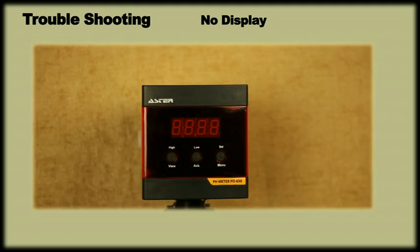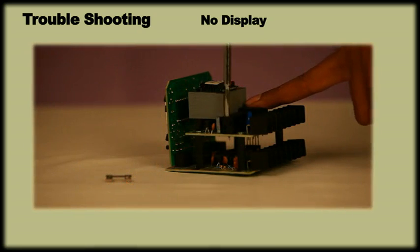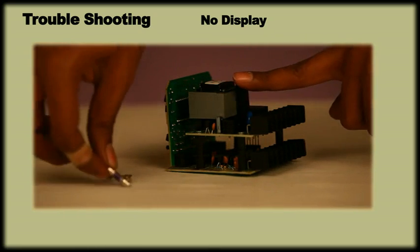Troubleshooting: If the meter shows no display, check the input supply with the help of multimeter and ensure it gets required supply. In case display remains off despite proper supply, open the instrument and change the fuse with the new 630 milliampere fuse.